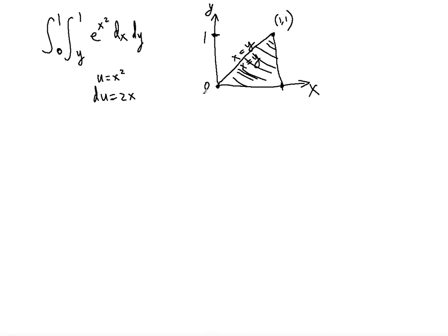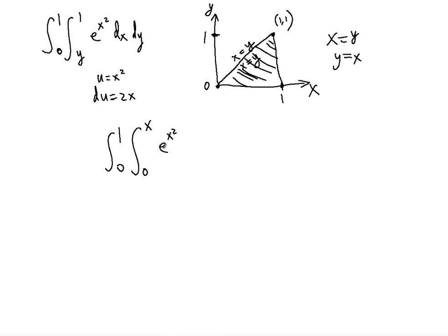To switch the order of integration, instead of 0 to 1 for y we're going to use 0 to 1 for x. For y, we go from 0 to x, because x = y can be rewritten as y = x. So the y limits are from 0 (the x-axis) up to the line y = x.